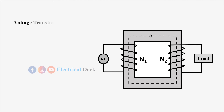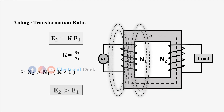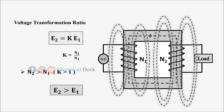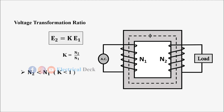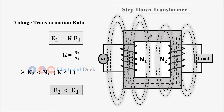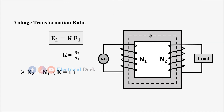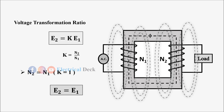From the voltage transformation ratio, if the secondary turns N2 is greater than the primary turns N1 — that is, K > 1 — then E2 > E1, and the transformer works as a step-up transformer. If secondary turns N2 is less than primary turns N1 — that is, K < 1 — then E2 < E1, and the transformer works as a step-down transformer. If both the secondary and primary turns are equal, then E2 = E1, and the transformer is called an isolation transformer.